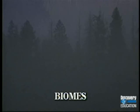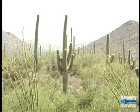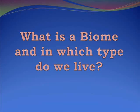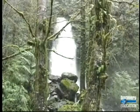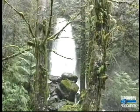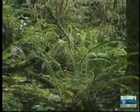Usually ecologists and biologists study biomes. Biomes are areas of characteristic climates and vegetation. Examples of biomes would be the Arizona desert. What is a biome and in which type do we live? And the temperate rainforests of the Washington coast, which have mild temperatures and high levels of precipitation.